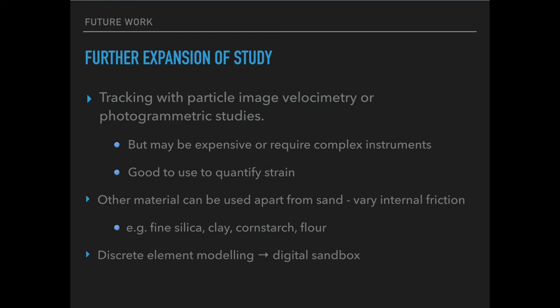The project can be further expanded through particle tracking with particle image velocimetry or photogrammetric studies, which is good to quantify the strain that has happened, but may be expensive and require complex instruments. Other materials can be used to vary the internal friction, such as fine silica particles, clay, and cornstarch. Additional simulations can also be made by discrete element modelling.